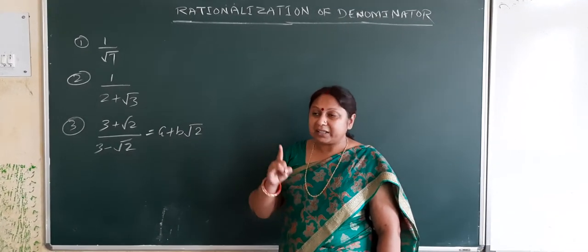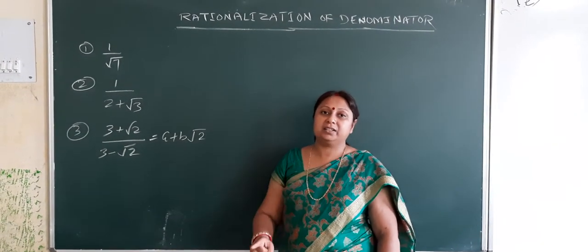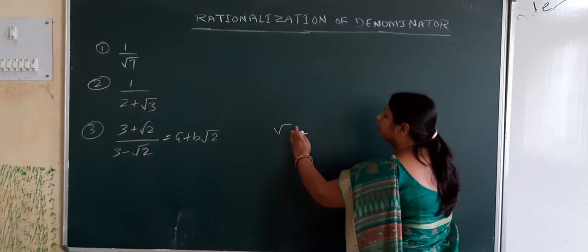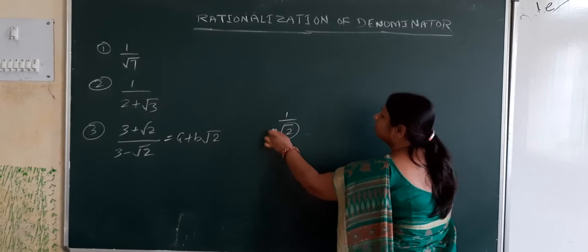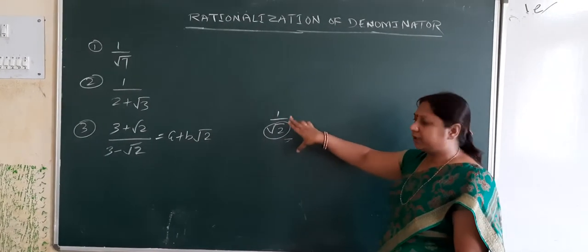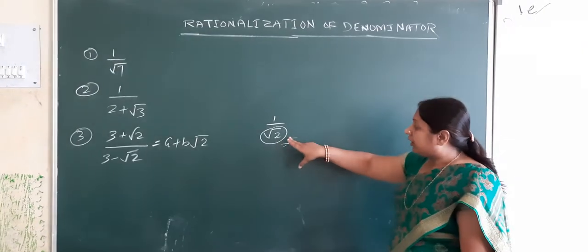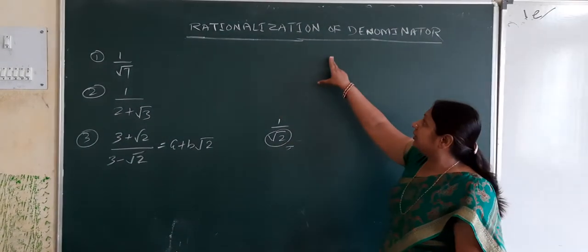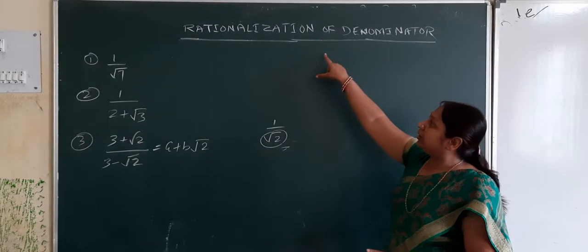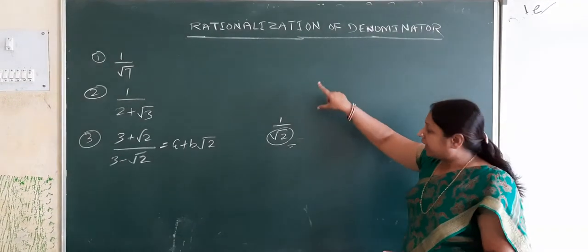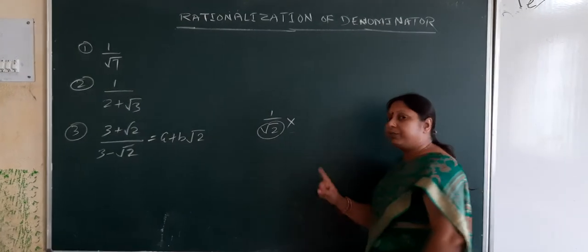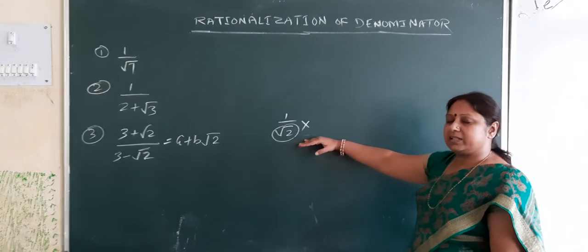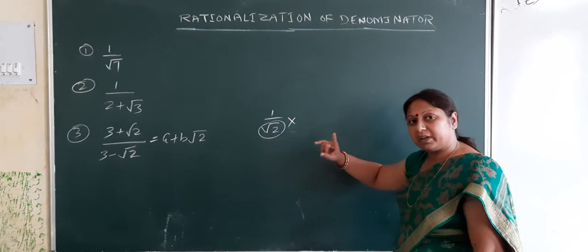That suitable number is called the rationalizing factor. For example, suppose we have root 2 in the denominator — 1 by root 2. The denominator is an irrational number, so we need to make it rational by rationalizing the denominator. We convert the irrational denominator to rational by multiplying or dividing by a suitable number.